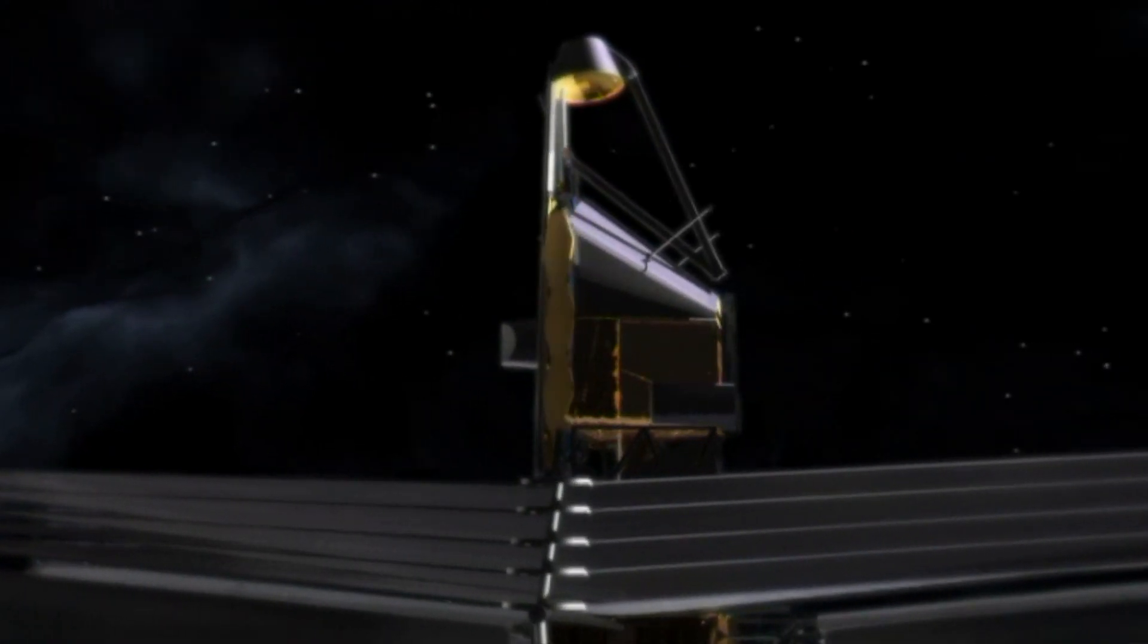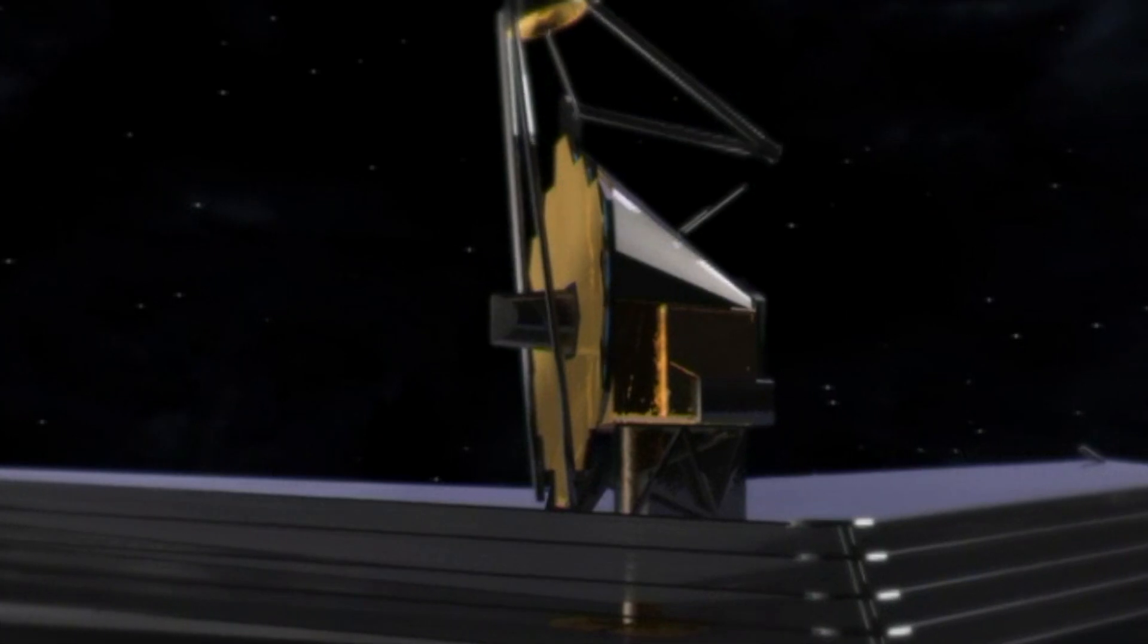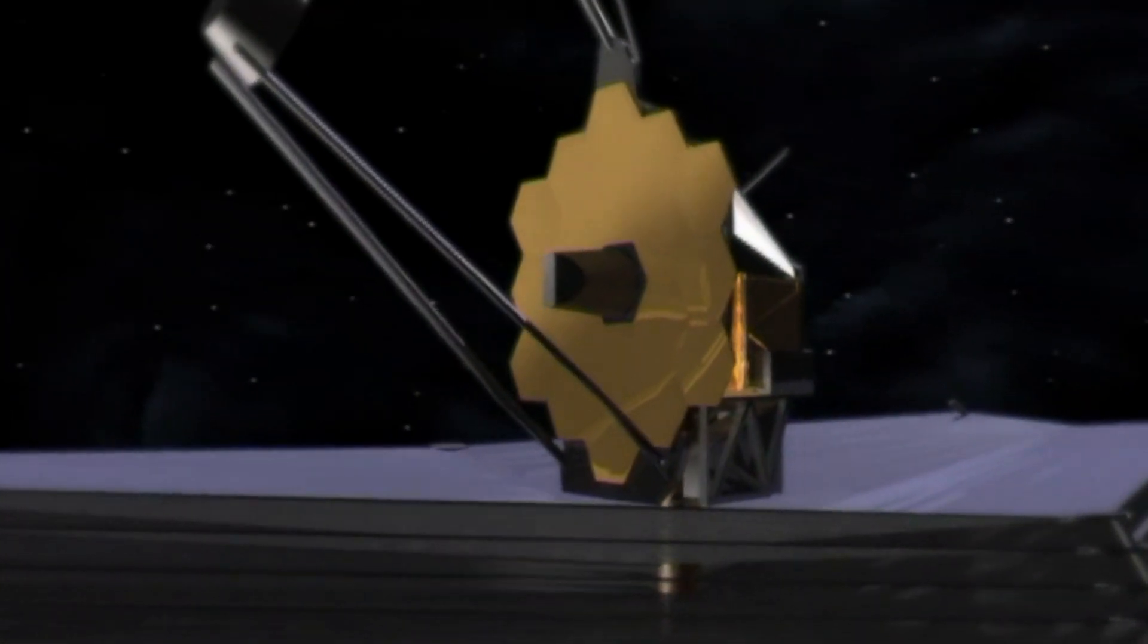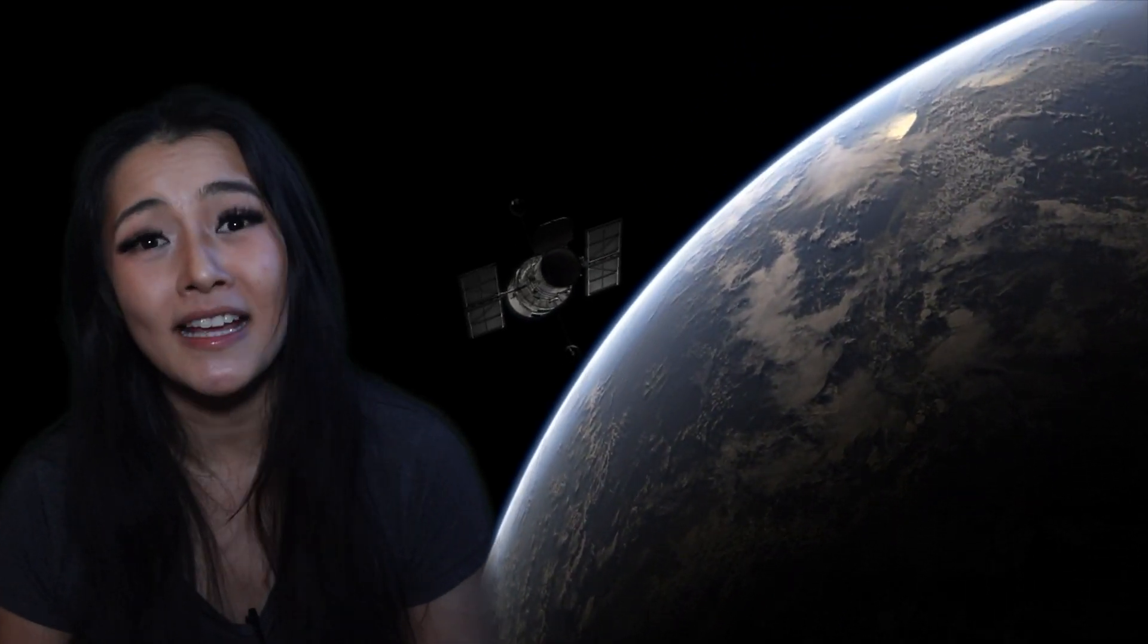Earendel will be observed with the James Webb Space Telescope that was launched back in December. The telescope is still being prepared for observations, but we expect to have the first observations in June or so. James Webb is Hubble Space Telescope's successor, offering higher resolution images and spectra. This means that James Webb will be able to tell us if Earendel is really an individual star, or instead maybe it's a binary or even star cluster. The spectra will be able to tell us more about what the star is made of.